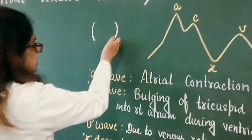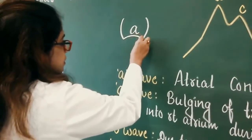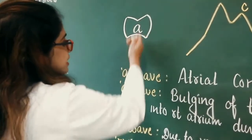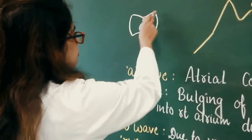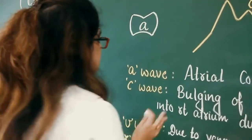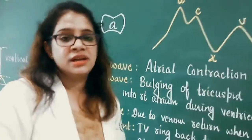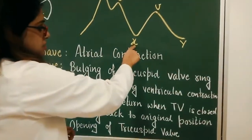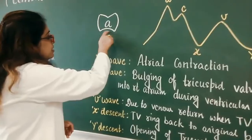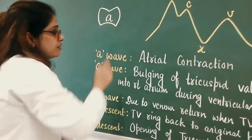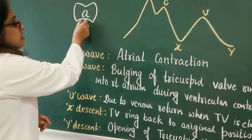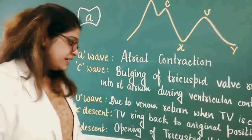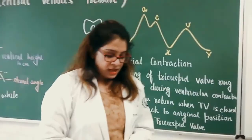Using a diagram of the atrium, tricuspid valve, and vena cavae: the a wave is due to atrial contraction; the c wave is due to bulging of the tricuspid valve into the atrium during isovolumetric ventricular contraction; and the v wave is due to drainage from the vena cava into the right atrium. The x descent occurs when the tricuspid valve ring returns to its original position, decreasing right atrial pressure. The y descent occurs due to opening of the tricuspid valve.